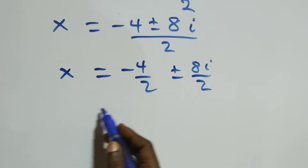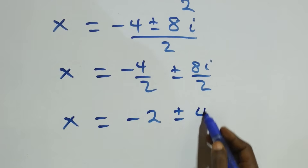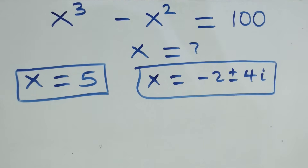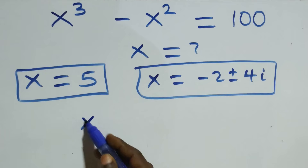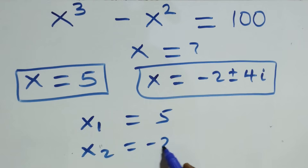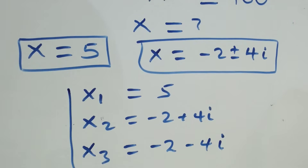So 2 goes into 4 giving minus 2, and 2 goes into 8 giving 4, so x equals minus 2 plus or minus 4i. These are two complex solutions. Together in this problem we have three solutions: x1 equals 5, x2 equals minus 2 plus 4i, and x3 equals minus 2 minus 4i — one real and two complex solutions.